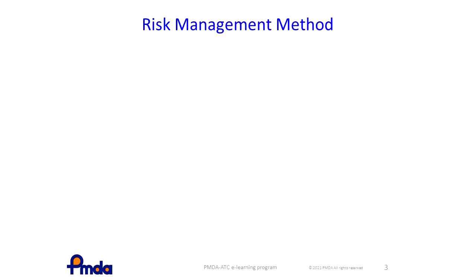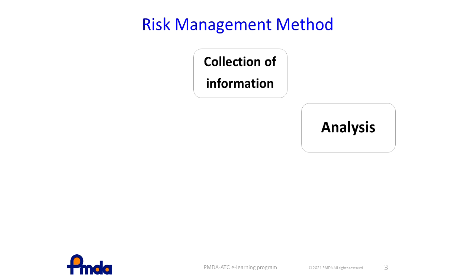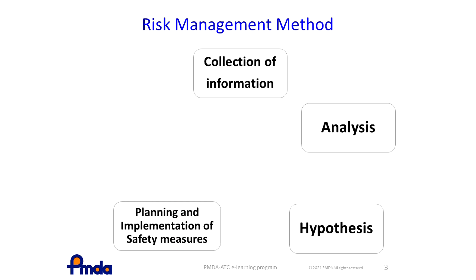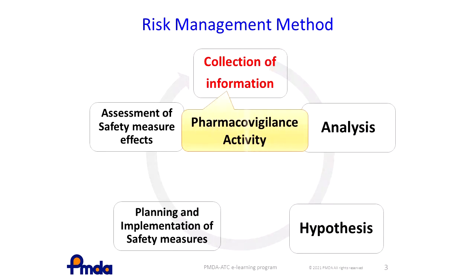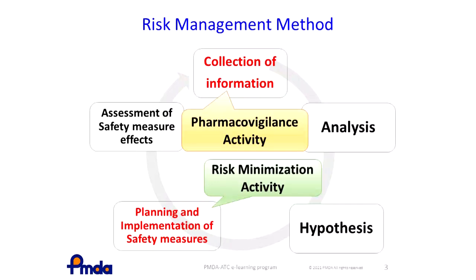This slide shows the risk management cycle. First, the information of adverse effects observed is collected. Then the data is analyzed and a hypothesis is formed. Next, based on the hypothesis, safety measures against the adverse effects are planned and implemented. After the implementation, the effects of the safety measures are assessed. This cycle is repeated throughout the life cycle of the drug. Pharmacovigilance activity comprises the collection of information stage, while planning and implementation of safety measures comes under risk management activity.